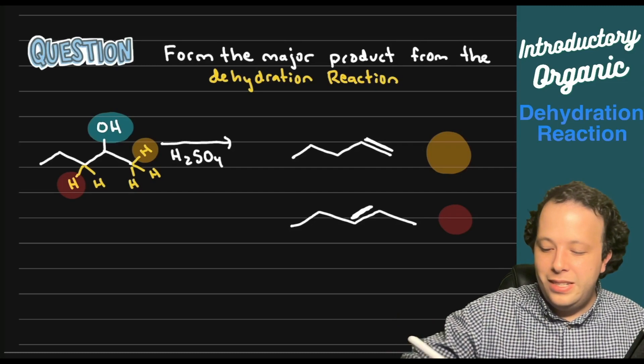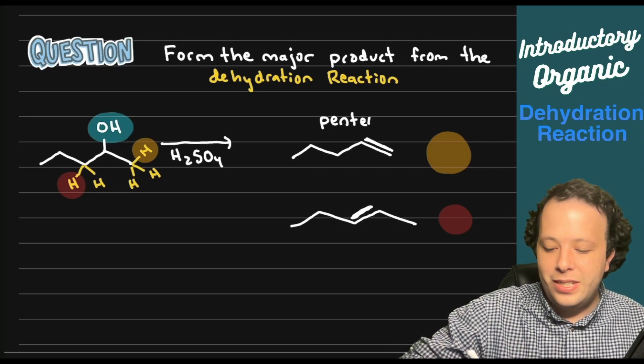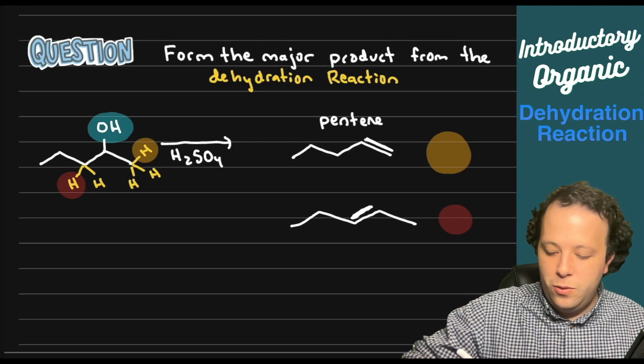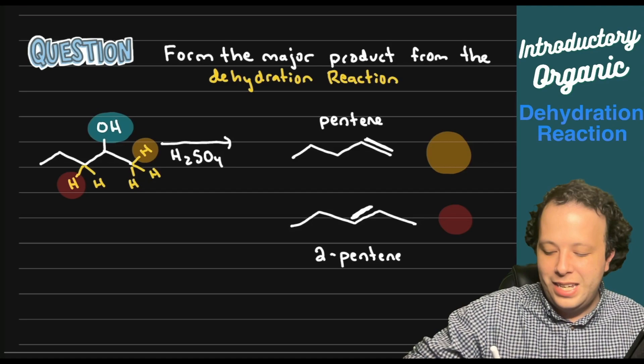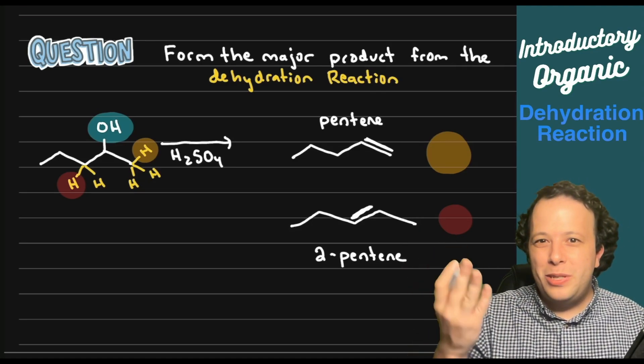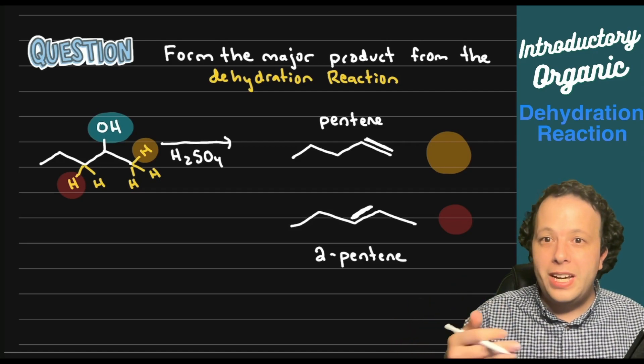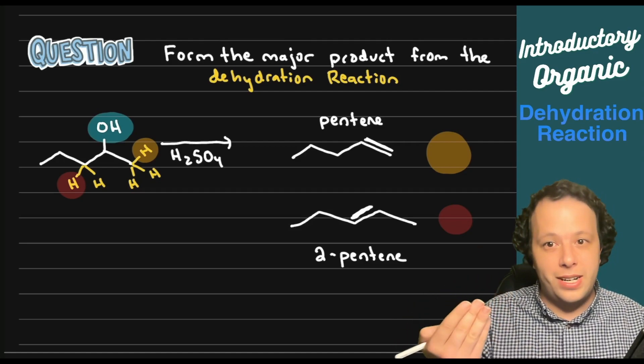So you can see how there is a big difference in both of these. We have pentene on the top and over here we have two pentene which will also have cis and trans isomers to it. So there's a big difference between the two. Which one will we have? Let's look at our rule to determine which is the correct answer.